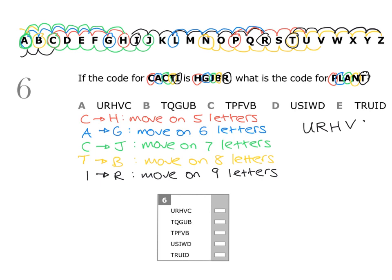So we can see that the answer is URHVC, which is option A. When you have UR, you can look at the answer choices and see that only option A starts with UR, so at that point you could be confident the answer was A and could have stopped. I always continue just to confirm everything is correct. Now mark your answer on the answer sheet with a horizontal line next to the letters URHVC.